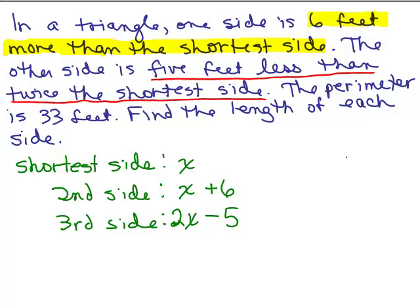So I have three sides. Now you could have just put this on a picture instead. You could have said I'll call this X and I'll call this X plus 6 and this 2X minus 5. It's just that you don't really know what the triangle looks like. But that's fine.